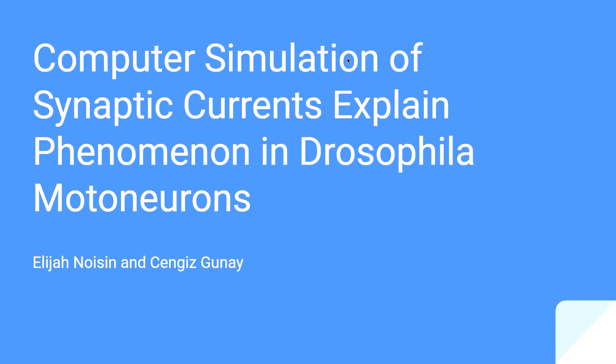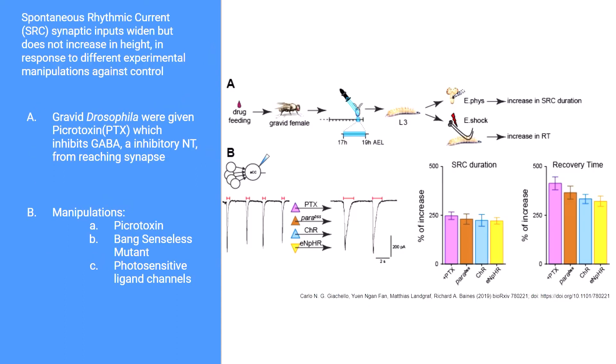Hello, my name is Elijah Noizen and I am a graduating psychology major here at Georgia Gwinnett College. Today I will be presenting my research which explains the neurological phenomenon that happens in the Drosophila — also known as the fruit fly — motor neuron. All the data I collected to explain this phenomenon comes from a biologically and biophysically accurate computer simulation of a Drosophila motor neuron, which was designed by my supervisor and professor Dr. Chingez Ganai.